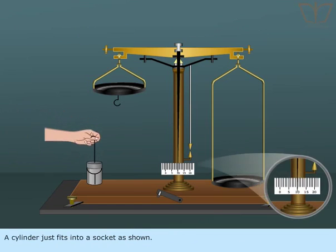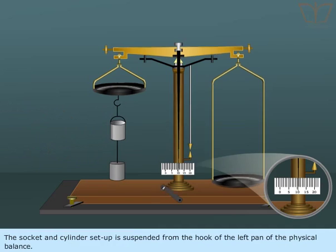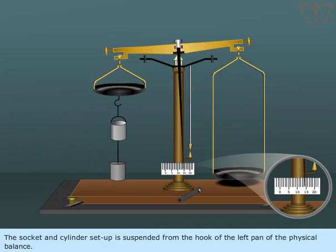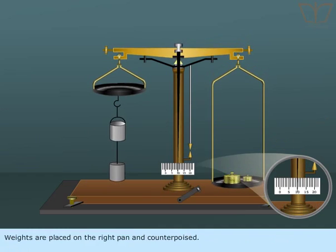A cylinder just fits into a socket as shown. The socket and cylinder setup is suspended from the hook of the left pan of the physical balance. Weights are placed on the right pan and counterpoised.